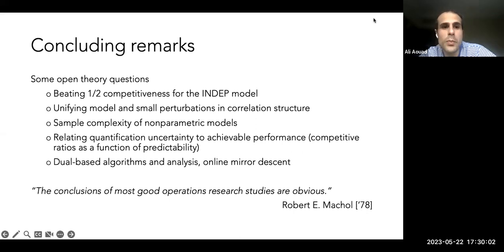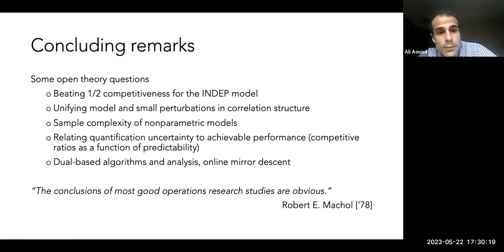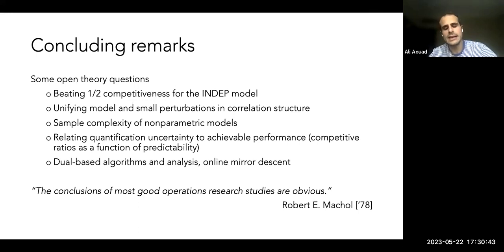Open questions include: can we beat one-half for the in-depth model, and is there a unifying framework combining the two models? The non-parametric nature raises sample complexity questions for estimation. Most importantly: how do we relate the quantity of uncertainty to achievable performance? And from an algorithmic perspective, dual-based algorithms like online mirror descent and PID controllers would be very important since these are commonly used by practitioners.